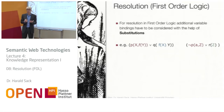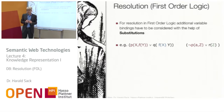In first-order logic, it gets a little bit more complicated because here we have variables and functions inside our clauses or canonical normal form. What we see here are two clauses. These clauses contain predicates, variables, and functions. The trouble is: how can we identify literals that are negated and not negated, and then perform the resolution step?